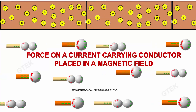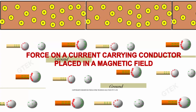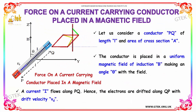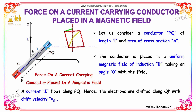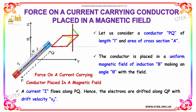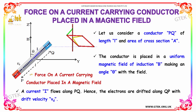Let us talk about the force on a current carrying conductor placed in a magnetic field. Consider a conductor PQ of length L and area of cross section A. The conductor is placed in a uniform magnetic field of induction B, making an angle θ with the field. A current I flows along PQ, hence the electrons are drifted along QP with the drift velocity VD.